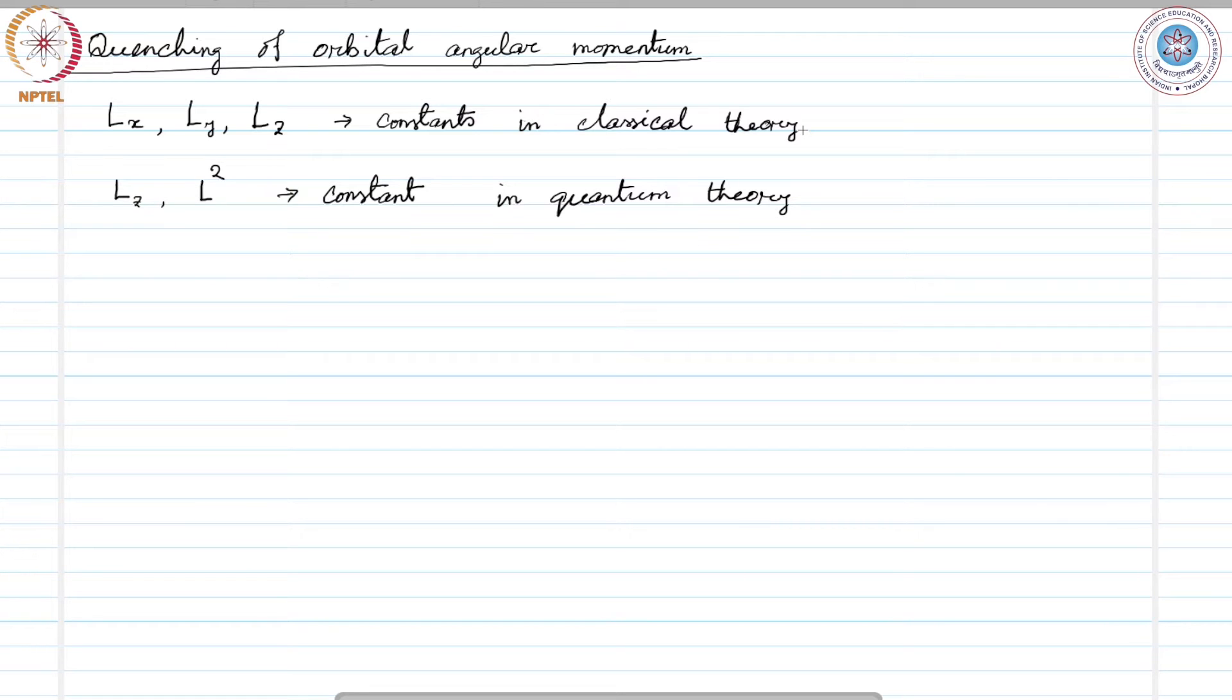When L_z averages to zero, the angular momentum is said to be quenched. So, L_z average going to zero means orbital angular momentum quenched.